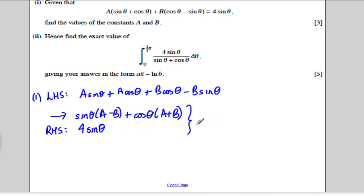So from these two, we can say that A minus B must equal 4. And we can also say that A plus B must equal 0. Two simultaneous equations, two unknowns, you could probably spot the answer very easily, but just to make it mathematical, I would add equations 1 and 2. So to eliminate the Bs, I would get 2A is 4, so A is 2.